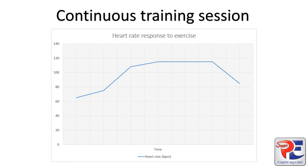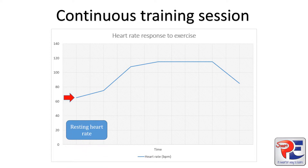So let's look at breaking this graph down. This first part here we would identify as being resting heart rate. A typical resting heart rate for an individual will be around 60 to 80 beats per minute.